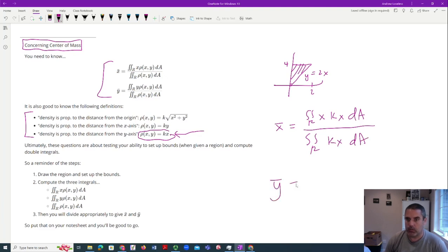And then for ȳ, you would do the same thing. y times kx dA double integral kx dA. And whatever the density was, which like I said is something they have to give you or say in words, goes in these spots.